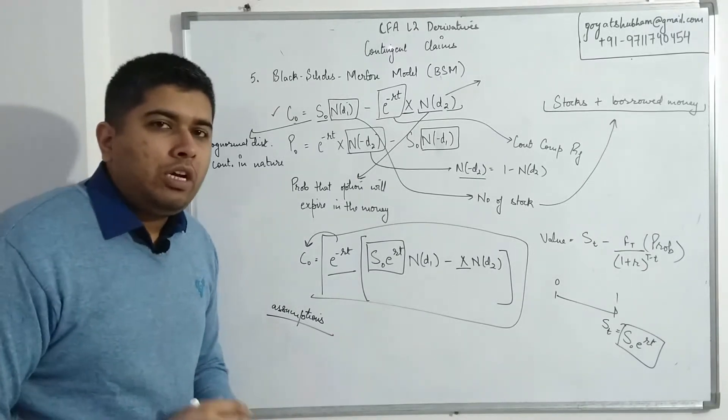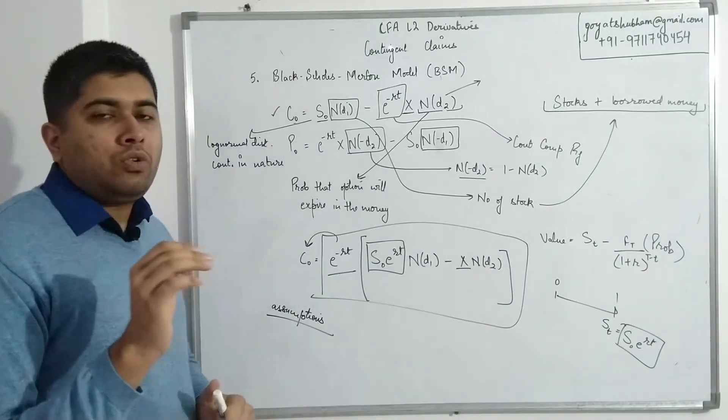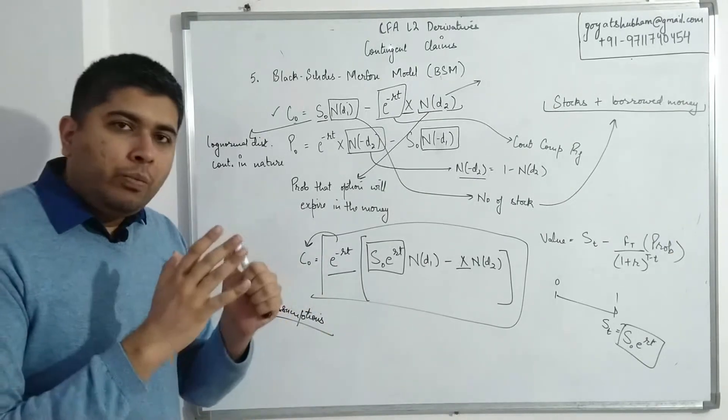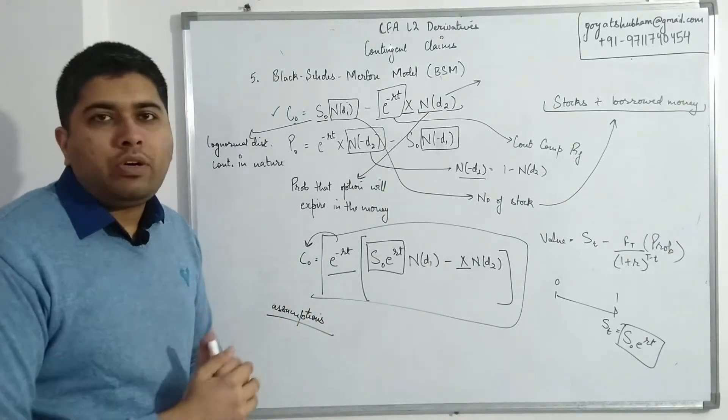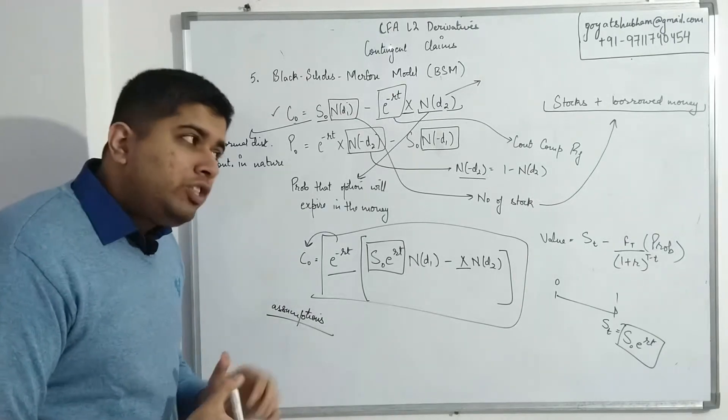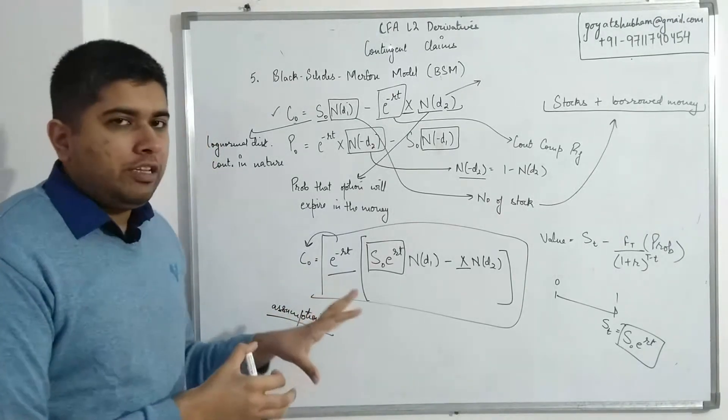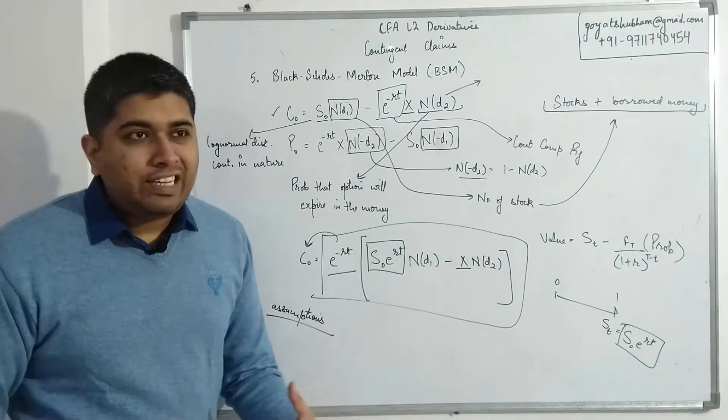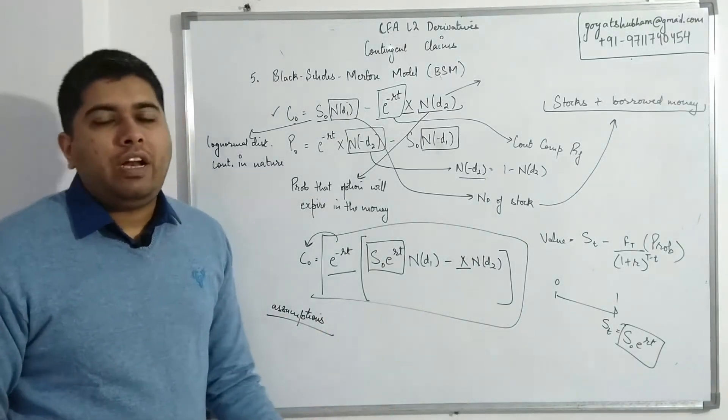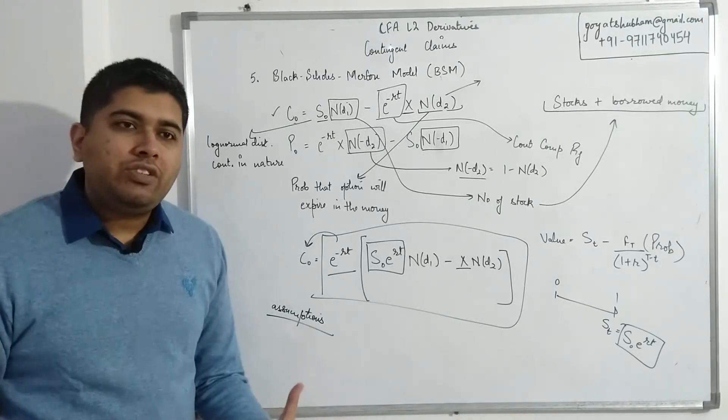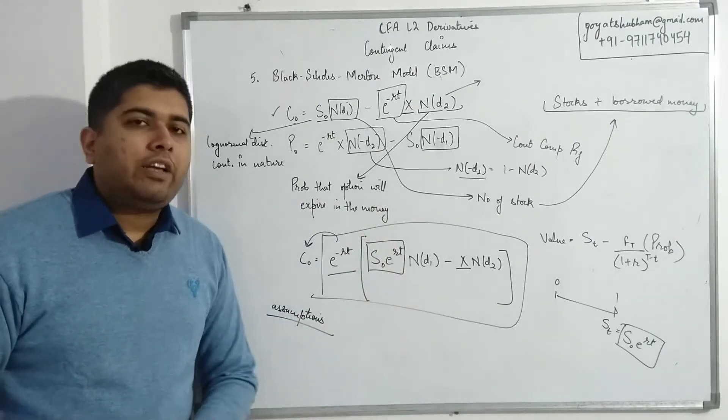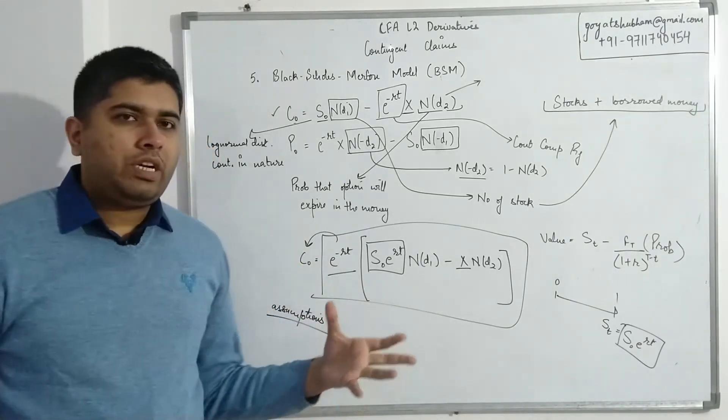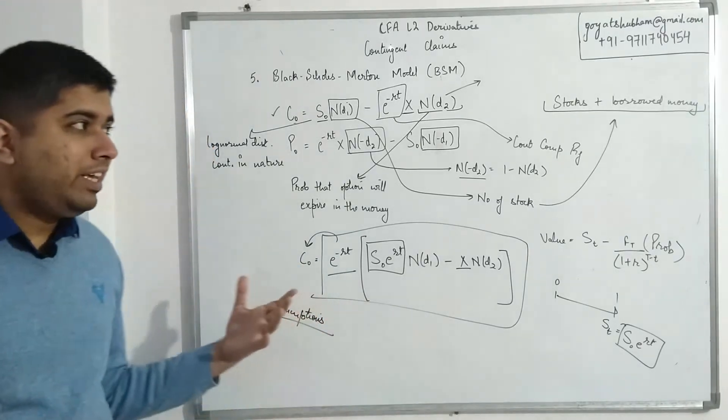We know what the volatility is and that would remain constant, which doesn't apply this model in the real world as such, because in the real world you have recession period where the risk increases and then you have growth period where the risk is relatively low. So volatility keeps changing, but this model says that is not possible.